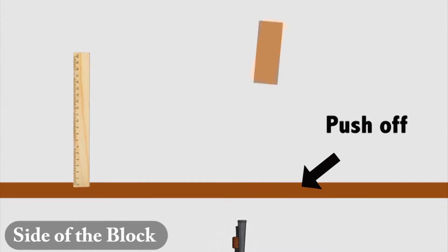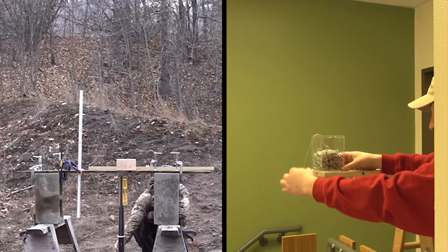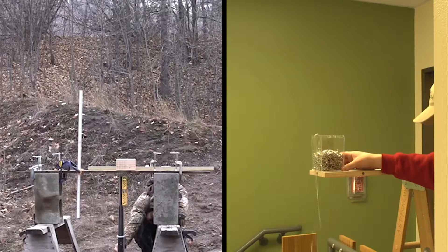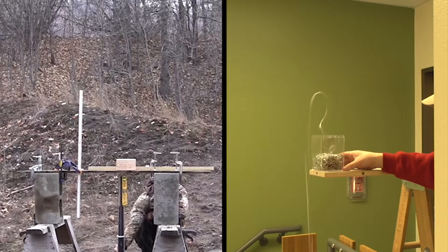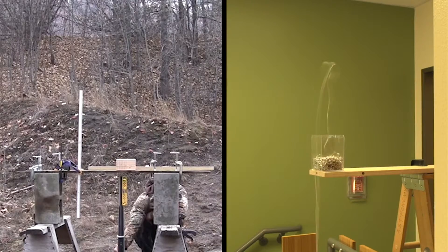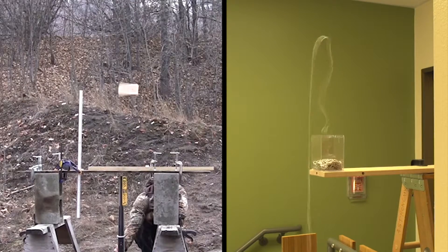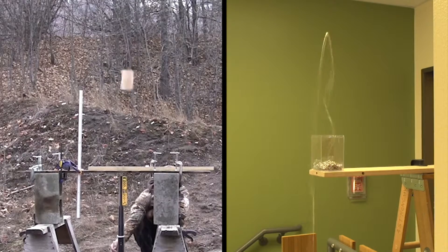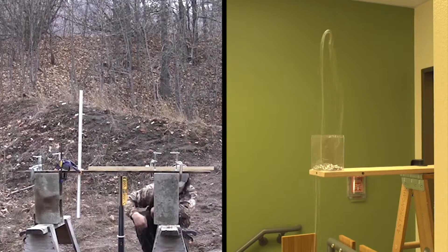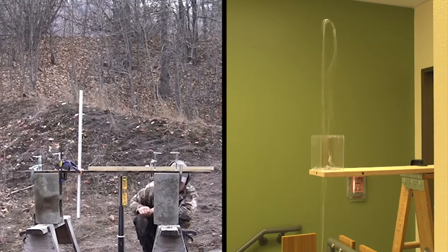For the chain fountain, this extra kick from the rotation of the links is what pushes the links above the edge of the container. Without the kick, they would not rise above the edge.